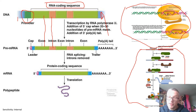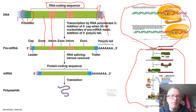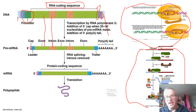We also talked about what happens at the end — how we stop this process. In prokaryotes we talked about rho-independent and rho-dependent termination: either using a hairpin loop structure or a rho protein to stop the transcription process.